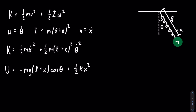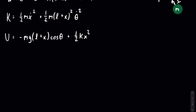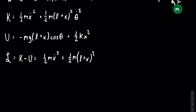The Lagrangian is the difference between the kinetic and potential energies. This is going to be equal to one half m x dot squared plus one half m times the quantity l plus x, squared, times theta dot squared, plus mg times the quantity l plus x, times cosine of theta, minus one half k x squared.